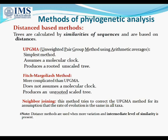In distance-based methods, trees are calculated by similarity of sequences and are based on distances. The resulting tree does not necessarily reflect evolutionary relationships. Distance methods compress all the individual differences between a pair of sequences into a single number. The first method is UPGMA — unweighted pair group method using arithmetic averages.